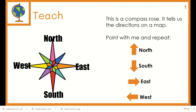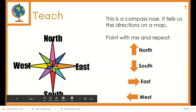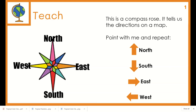This is a compass rose. It tells us the directions on a map. Point and repeat: north, south, east, west.